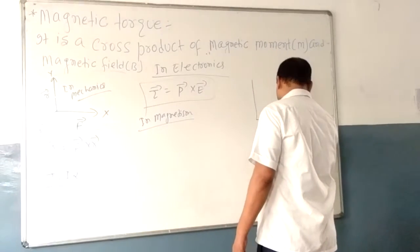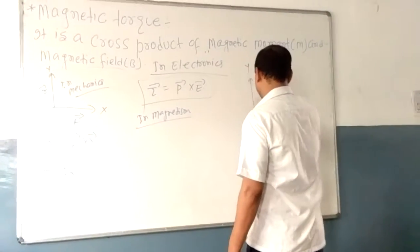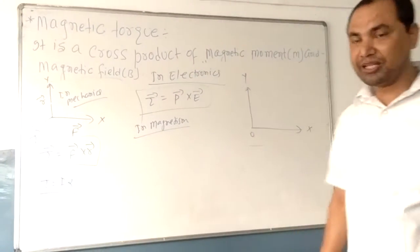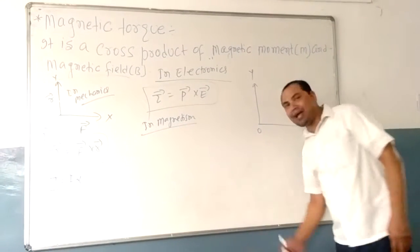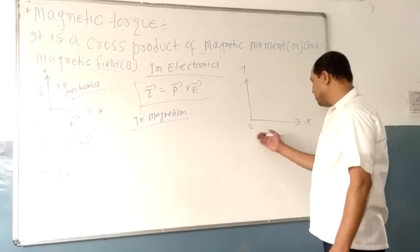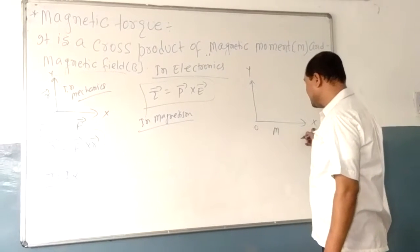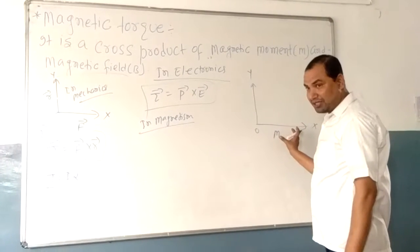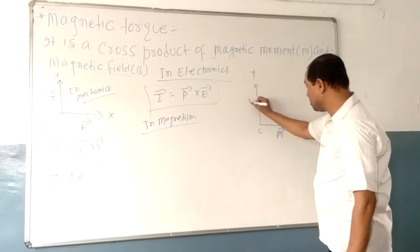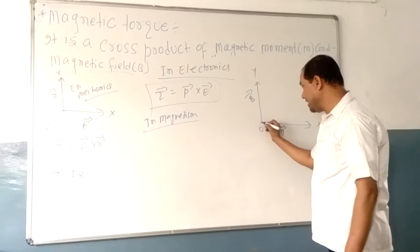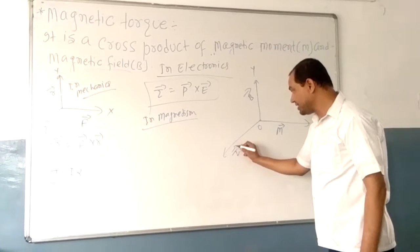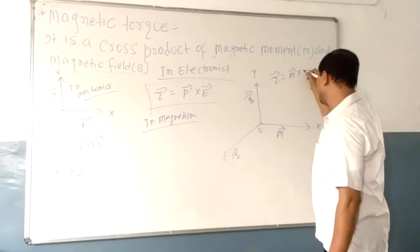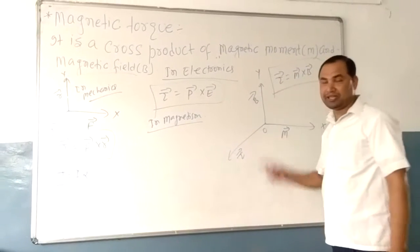In the previous chapter, I have taught you that the magnetic dipole moment M is equal to current into area: M = IA. In magnetism, if the magnetic dipole moment vector M is acting in a magnetic field B, then it experiences a magnetic torque, where this magnetic torque is equal to the cross product of magnetic dipole moment and magnetic field.